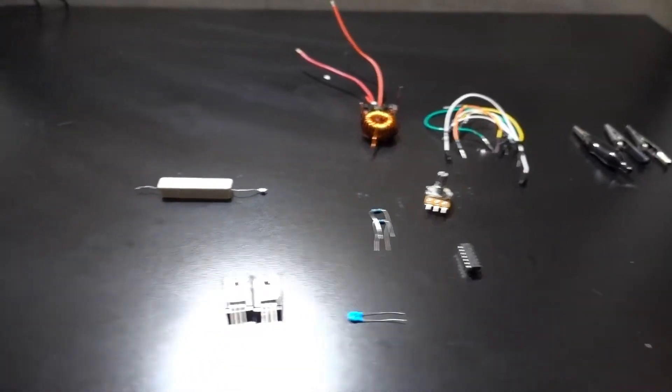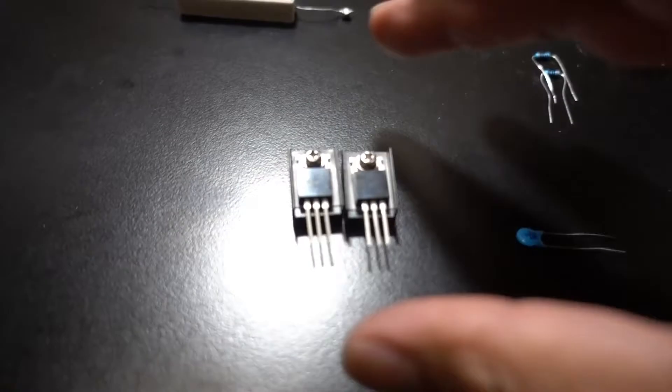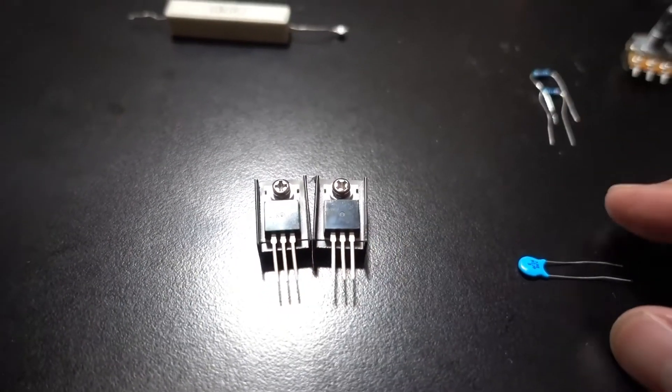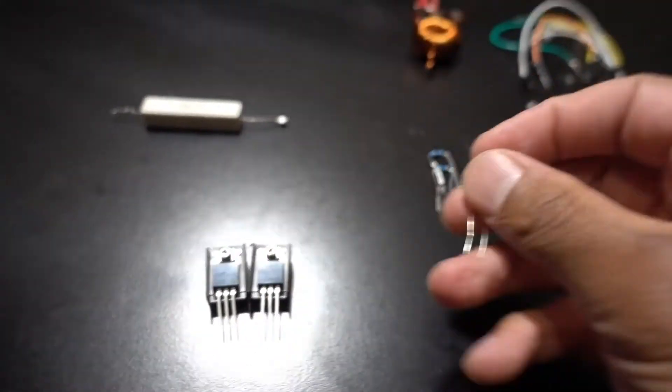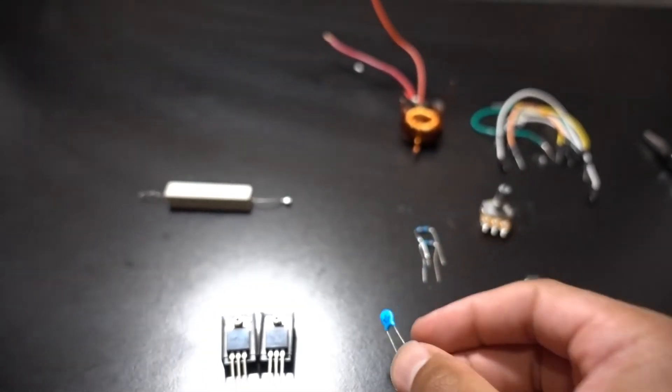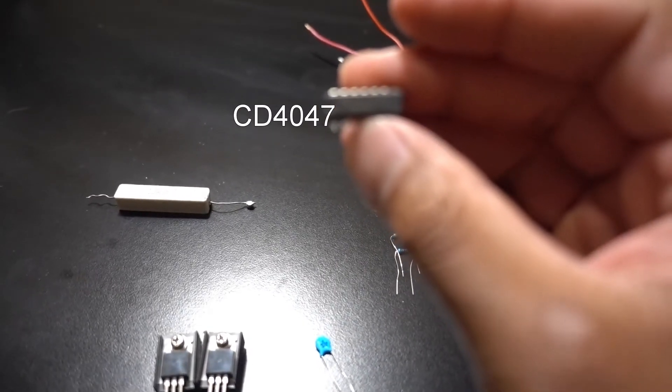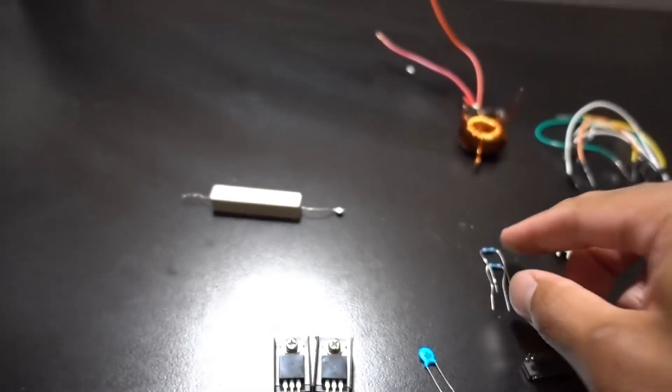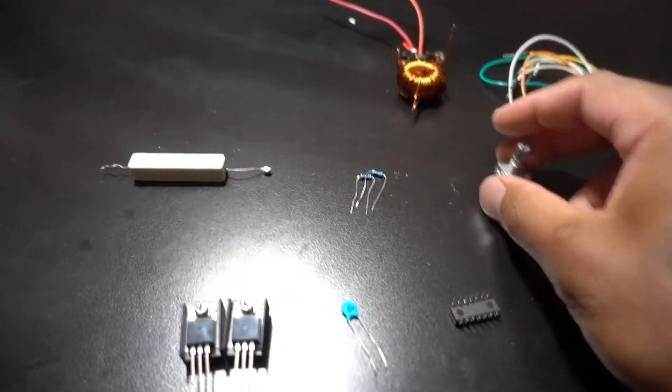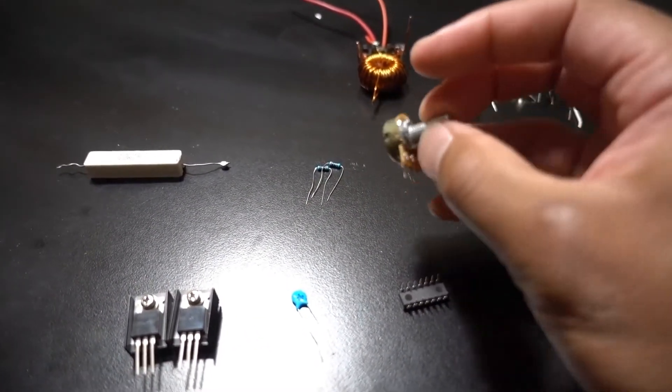So here are the components I used to make the circuit. I used a 10-watt 1-ohm resistor. I used two IRFZ44N MOSFETs, a 4700 picofarad capacitor. IC is a CD4047 and two 3-kilohm resistors and a variable 10-kilohm resistor.